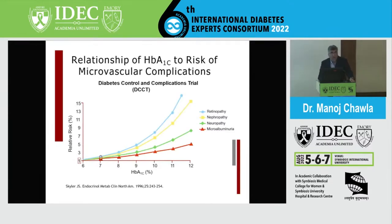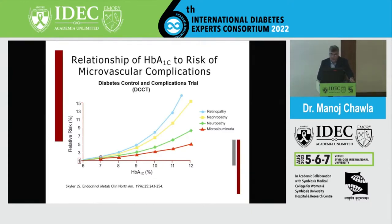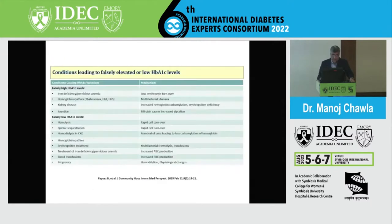It has been proven in trials like the DCCT that there is a clear link between HbA1C and microvascular complications. With each percentage increase in HbA1C, there is higher risk of retinopathy, nephropathy, and neuropathy.